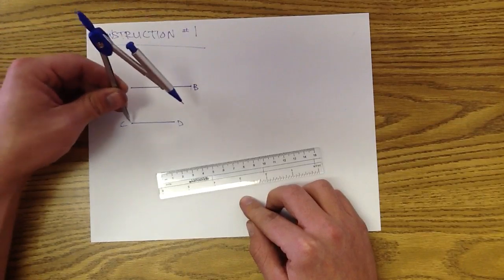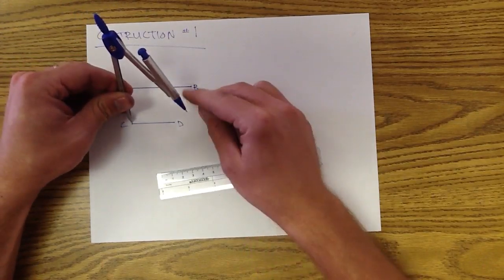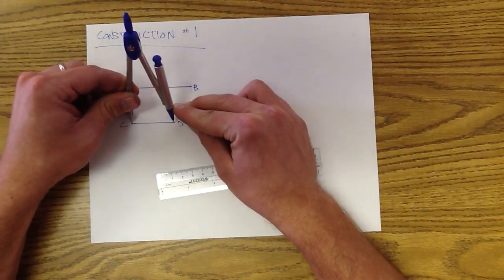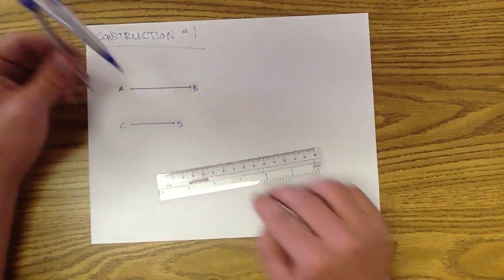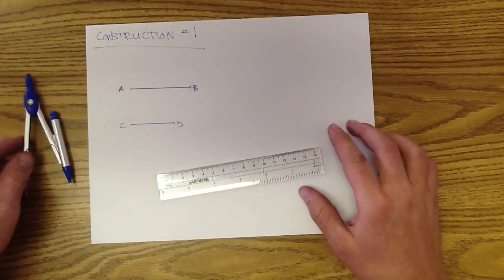You could do the same thing down here at CD, and you're going to have to make it smaller to make the length CD. So we've got a segment CD, and we've also got a segment AB up here.